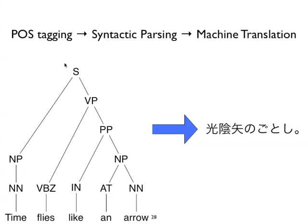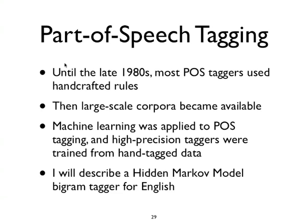A brief history of part of speech tagging. Until the late 1980s most part of speech taggers were actually created using handcrafted rules. This obviously had issues with coverage and accuracy. However, at that time large-scale corpora started to become available to researchers, and it is not surprising that machine learning techniques became popular in the field of natural language processing. One of the very first tasks to have machine learning applied to it was part of speech tagging, and soon high-precision part of speech taggers were trained from corpora with hand-tagged data.